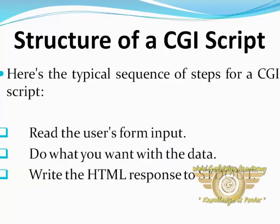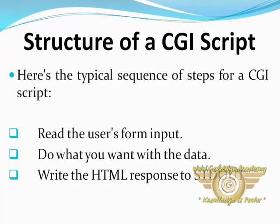Our last topic is the structure of a CGI script. Here is a typical sequence of steps: first, read the user's input; second, do what you want with the data; and third, write the HTML response to stdout.